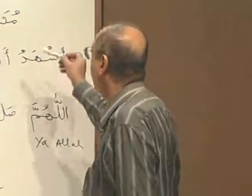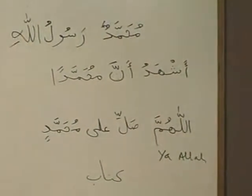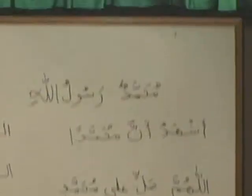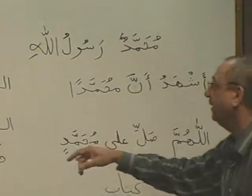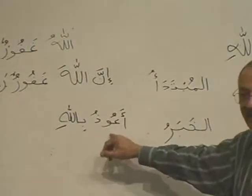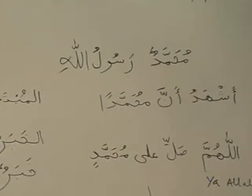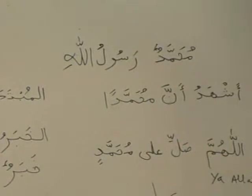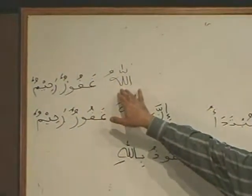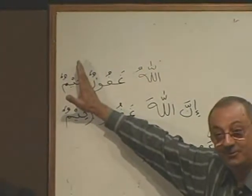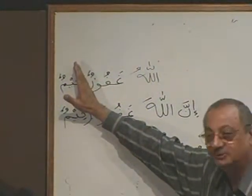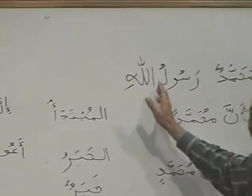Can you see here? Muhammadun Rasulullah — what kind of sentence is this? Jumla Ismiya. Muhammadun — it has Tanween, but is it definite or indefinite? It is definite, because it is a proper noun. How about Allahu Ghafoor? Allahu is the Mubtada — definite. Where is the Khabar? Ghafoor. Allah is most forgiving. Muhammad is the Rasul — he is the messenger.